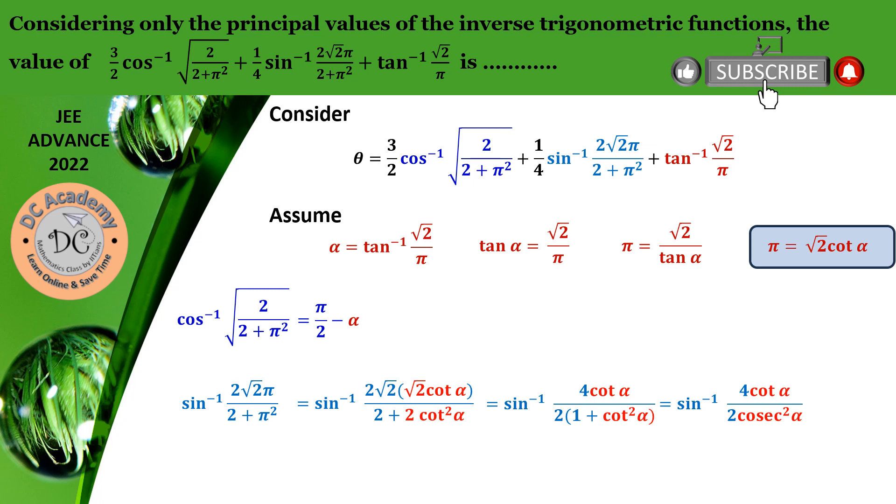Then we have 4 cot alpha divided by cosec squared alpha. If I convert it into sin and cos respectively, we get sin inverse of 2 sin alpha cos alpha. We know that 2 sin alpha cos alpha equals sin 2 alpha. Therefore, it will become sin inverse of sin 2 alpha, and if we are bothering about the principal value, it will be 2 alpha.